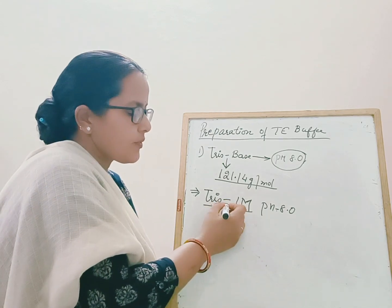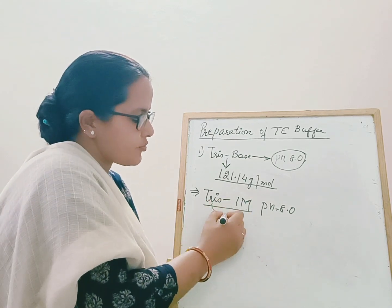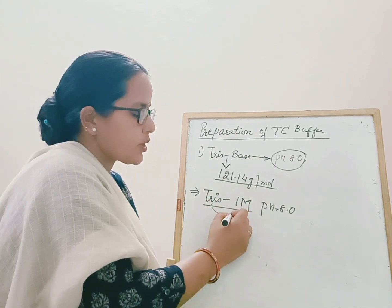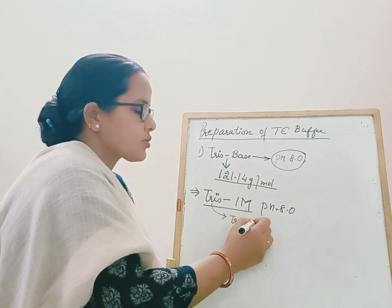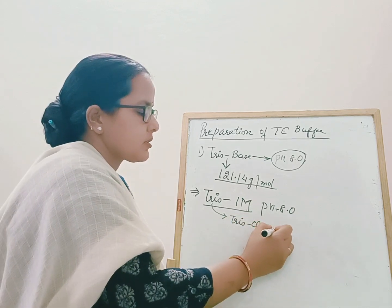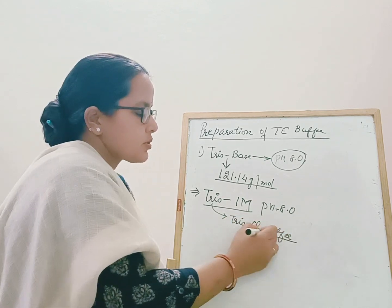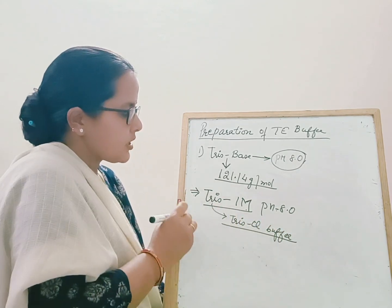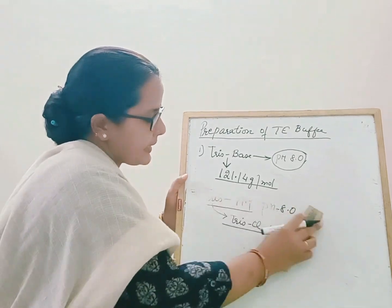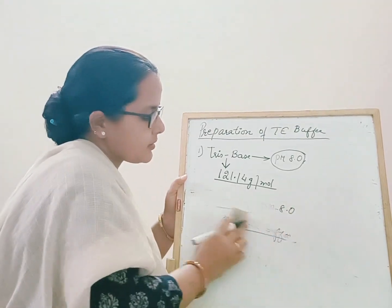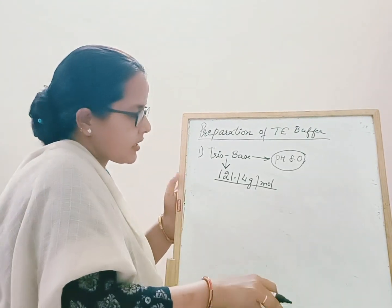Once you adjust its pH, the Tris base is converted to Tris-Cl buffer. To make a 1 molar solution, the calculation is simple: 121.14 grams dissolved in 1000 ml of water gives you a 1 molar solution.